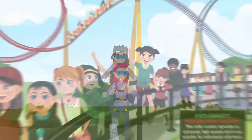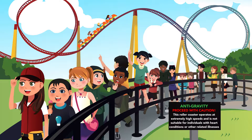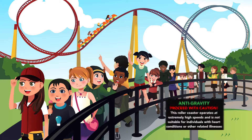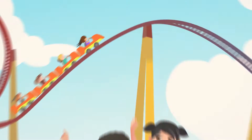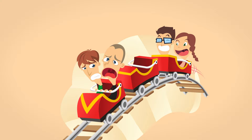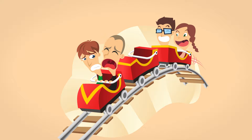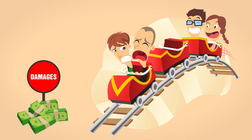Example 2: Mike and his friends decide to ride a new roller coaster called Anti-Gravity at Titan Amusement Park — 20 stories high and traveling at speeds approaching 100 miles per hour. A sign reads: 'Proceed with caution. This roller coaster operates at extremely high speeds and is not suitable for individuals with heart conditions or other related illnesses.' Before they are strapped in, a piece of the roller coaster's track breaks off from several stories above and strikes one of Mike's friends, fracturing his collarbone and shoulder. Mike's friend can recover damages because the accident was completely unrelated to the risks assumed while riding Anti-Gravity.